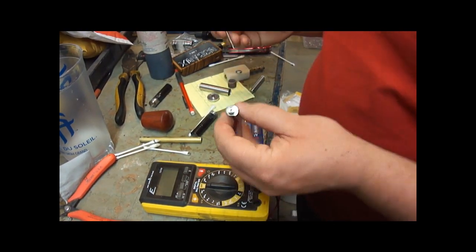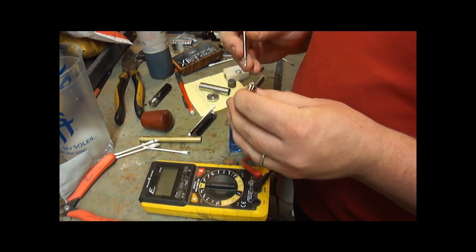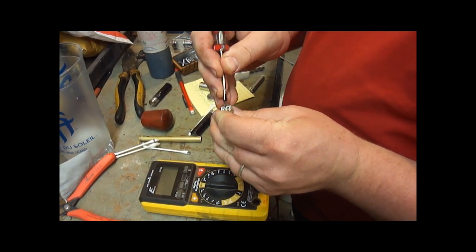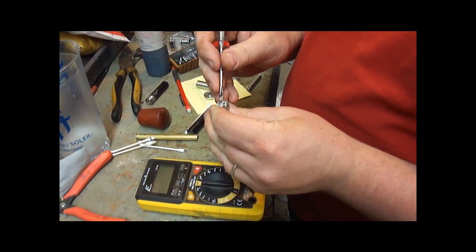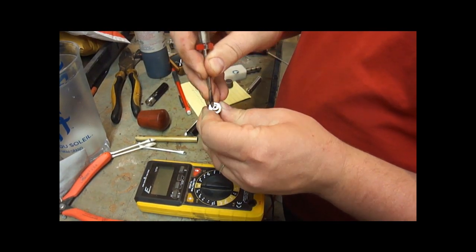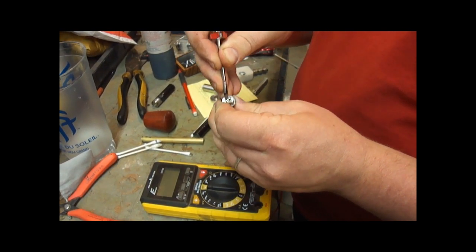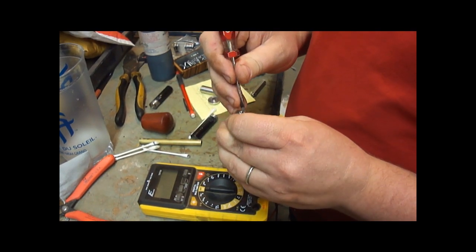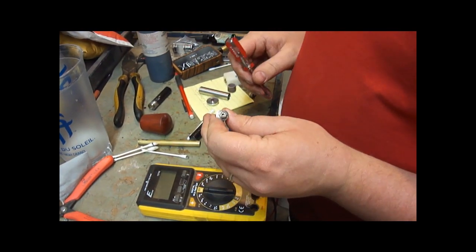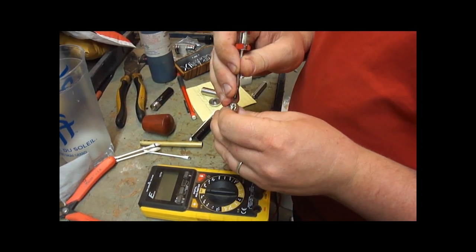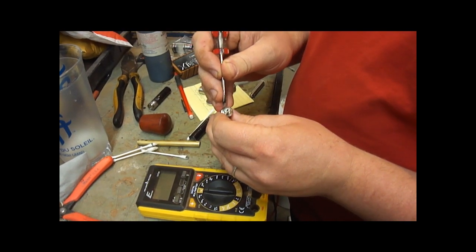So when you get one of these, you're going to want to make sure that the center pin is not pushed off to the side like that. Oftentimes you'll get them in and the center pin will be pushed off to the side. That's an automatic short right there. So you want to move your center pin to the center to where this metal is not touching the outer metal.